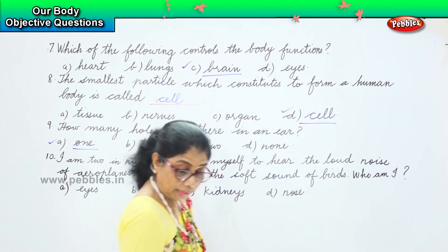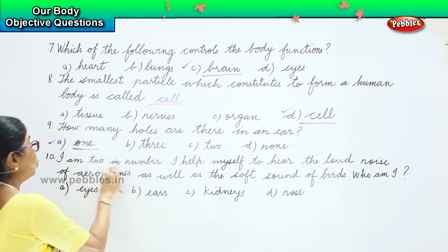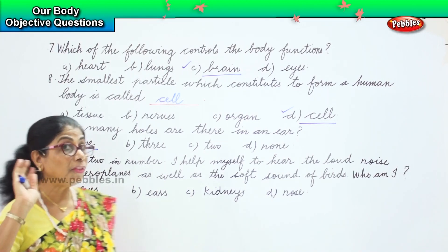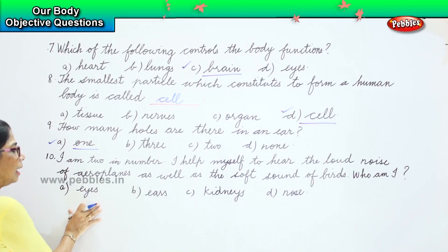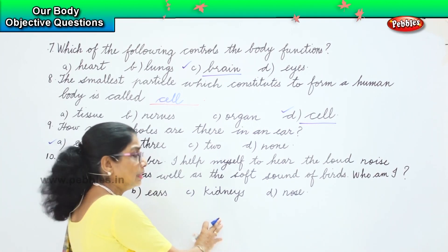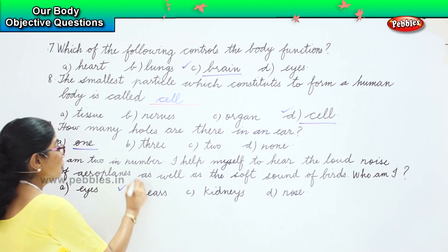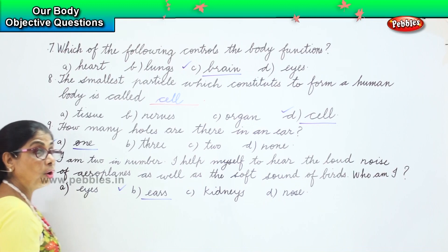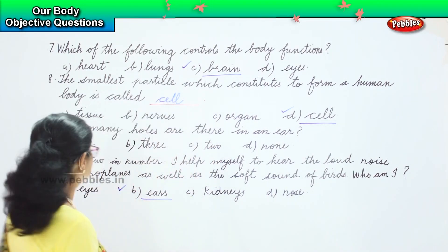Now what is the answer? I am two in number. So whatever you pick, there should be two. I help to hear the loud sound and the soft sound of birds. Is it eyes? Is it kidneys? Or nose? No. The answer is ears. I have two ears and I hear the loud noise of aeroplanes as well as the soft sound of the birds.